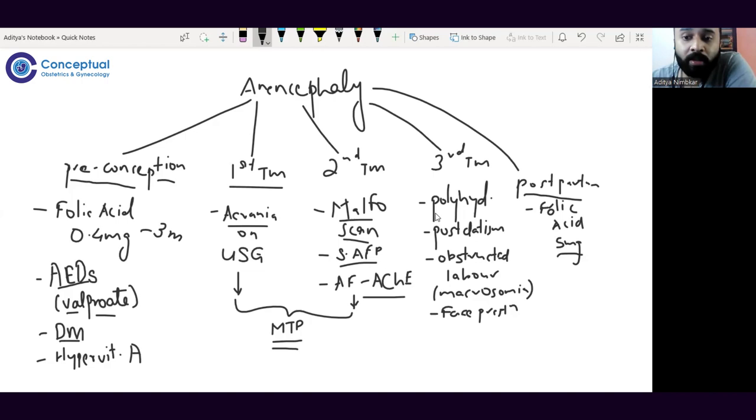In the third trimester, for women who are not registering early or for women where we failed to diagnose it—which doesn't really happen, this is straightforward—but in women who get registered late and don't have a scan, our 2021 MTP Amendment Act allows MTPs for congenital anomalies.